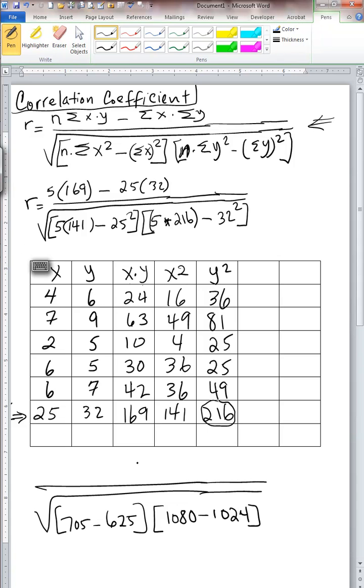And then we have our 5 times 216, which is 1080. And we subtract from it the 32 squared, which is 1024. And remember, in the numerator, we have 45. So that gives us 45 divided by square root of these two numbers multiplied by each other. So 705 minus 625 is 80, and 1080 minus 1024 is 56.